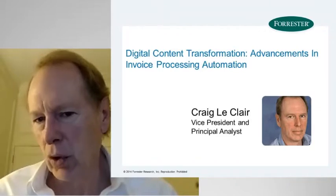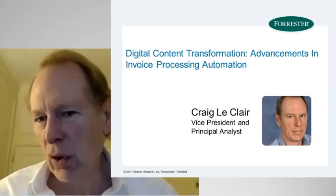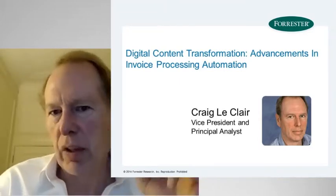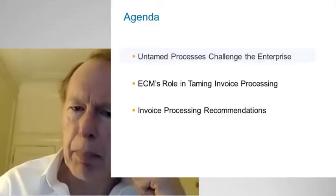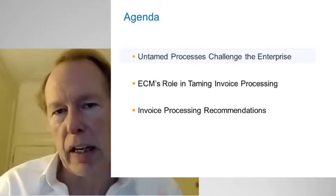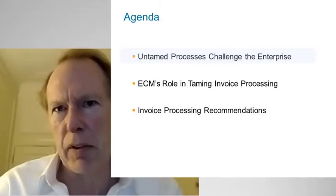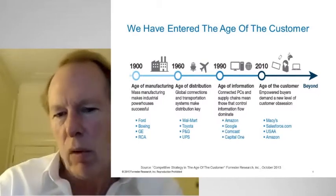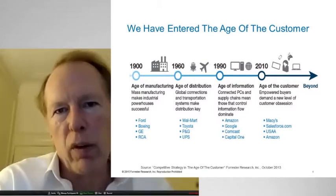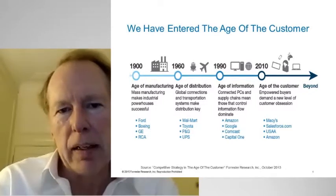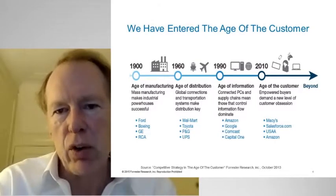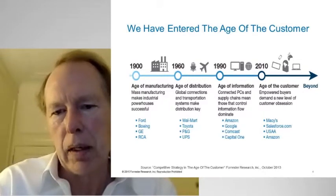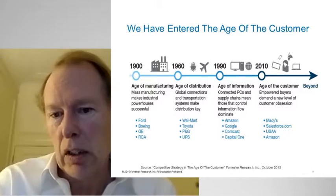We're in a very different time right now — a time where the customer has more information and more power. Much like how our parents might have bought a car years ago going to the one dealer in town who had 90% of the information, today the average online time spent by a car buyer is about 11 hours. When they go into the dealership, they already have as much information as the salesperson. This is an example of how the customer has a new set of power, and companies have to adjust. That's why the narrative at Forrester is all about the age of the customer, customer experience, and understanding the customer journey.